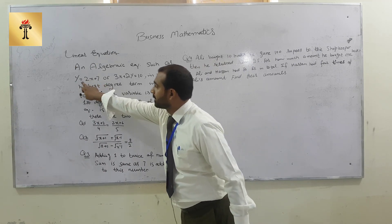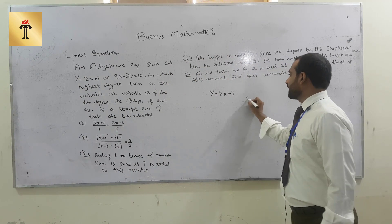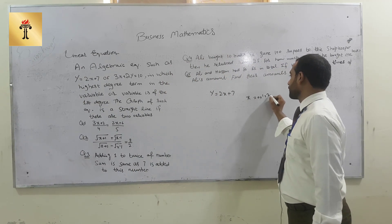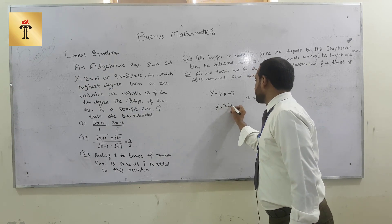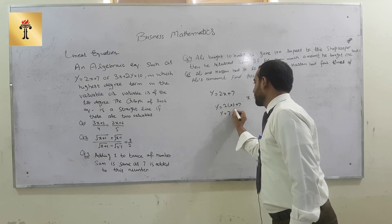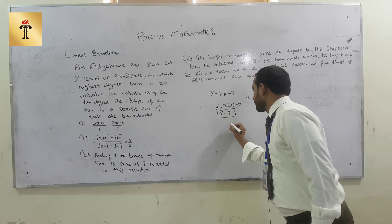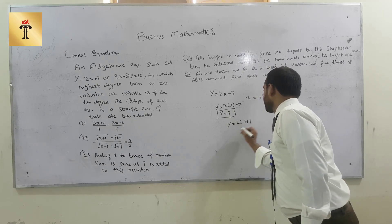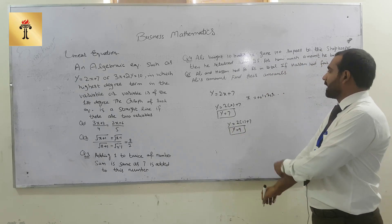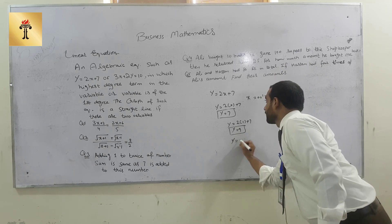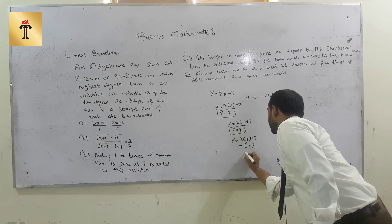The graph of such an equation is a straight line if there are two variables. For example, consider the first equation y = 2x + 7. Let's suppose we take x values 0, 1, 2, 3 and so on. When x = 0, substituting into the equation gives y = 7. When x = 1, y = 9. Similarly when x = 3, y = 13.